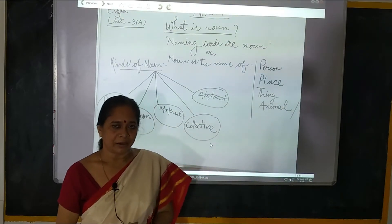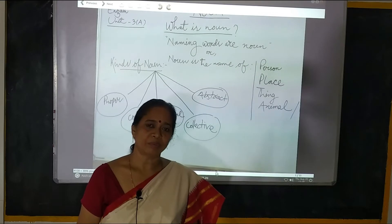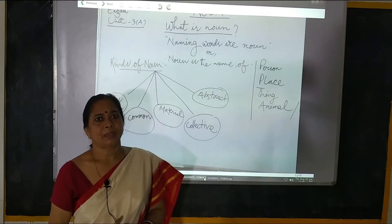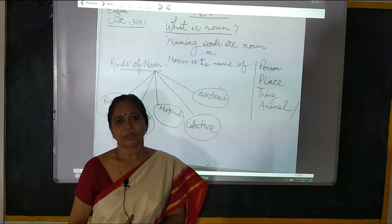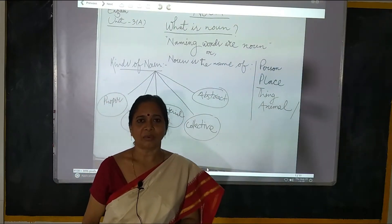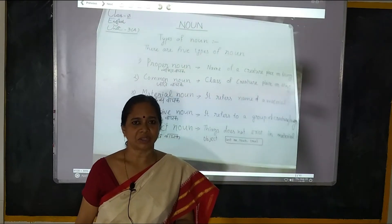Yeh definition. Now, types of Noun — 5 prakar ki Noun hai: Proper Noun, Common Noun, Material Noun, Collective Noun, Abstract Noun.